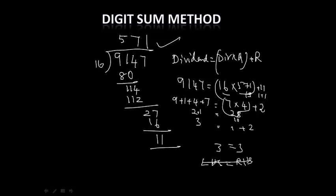If left hand side is not equal to right hand side, our answer is wrong. So this can be still speeded up by using another rule, that is cast out 9 rule along with digit sum method. So let us take the same example 9147 divided by 16.